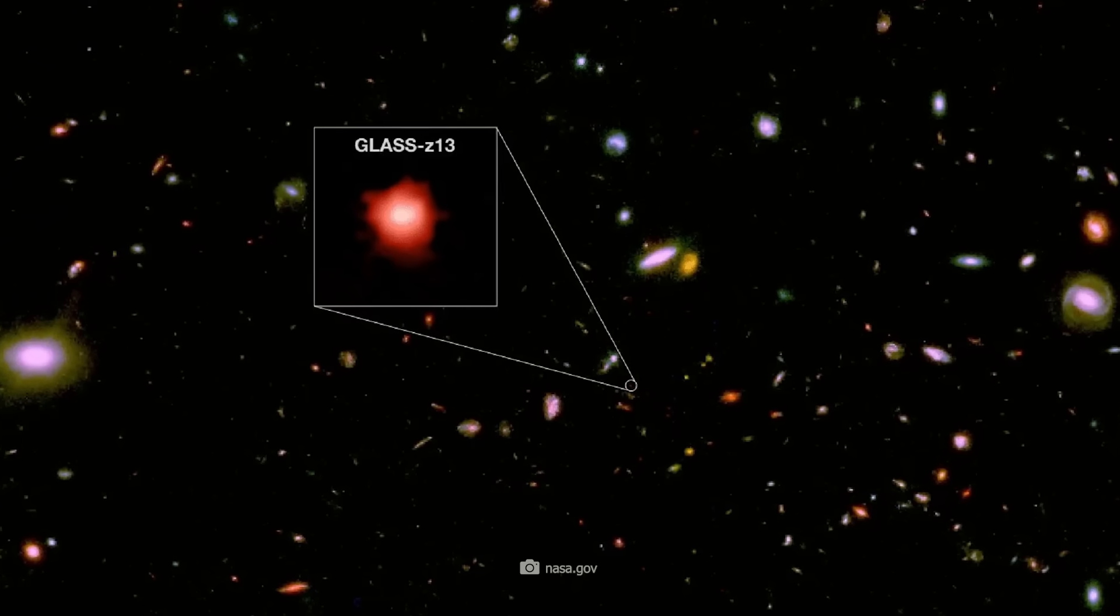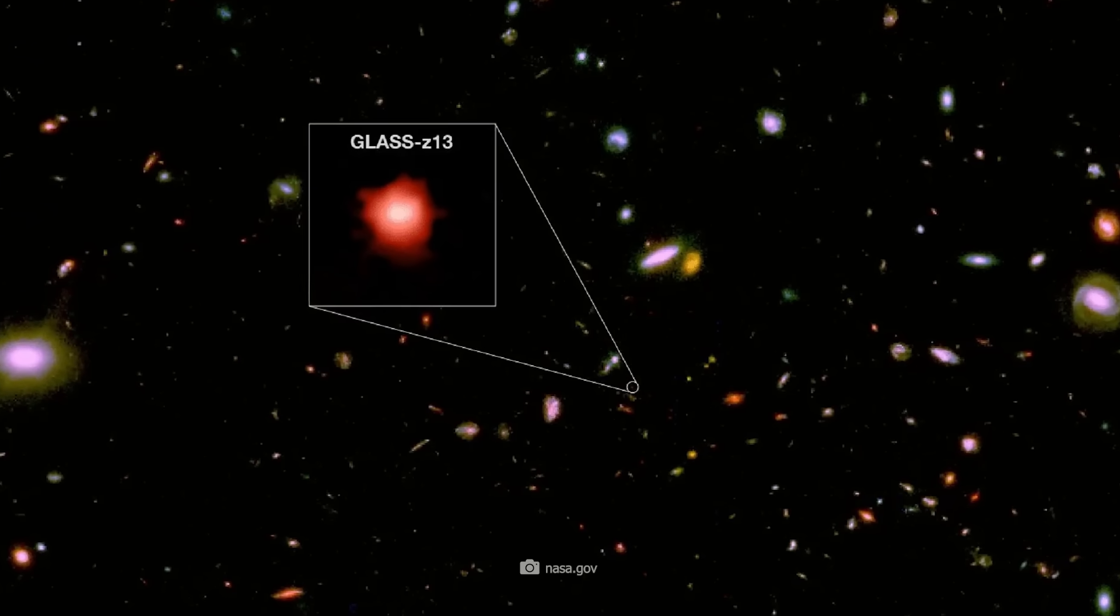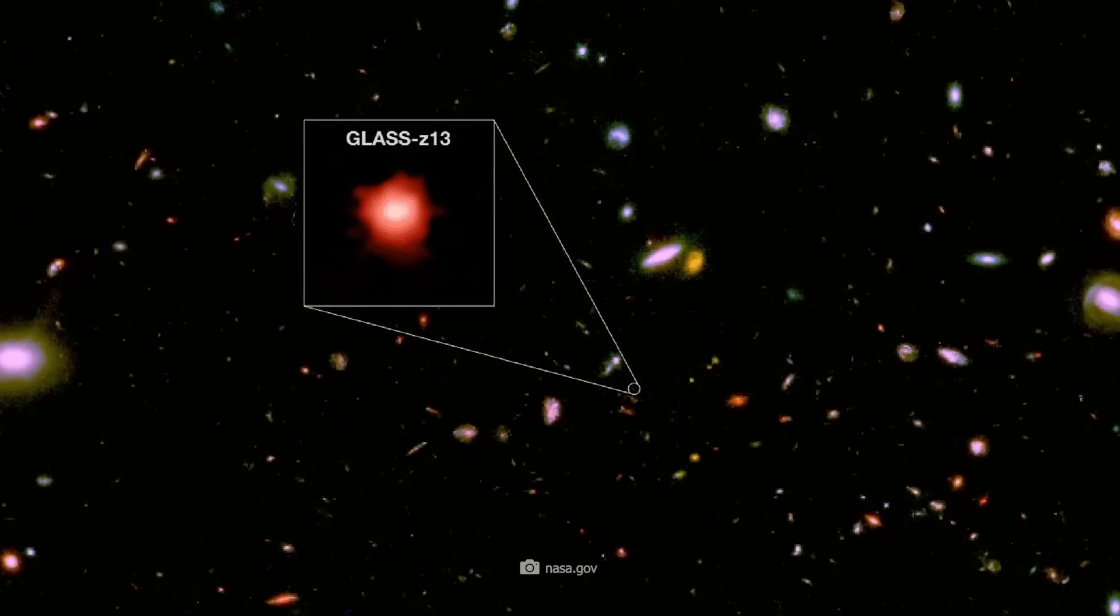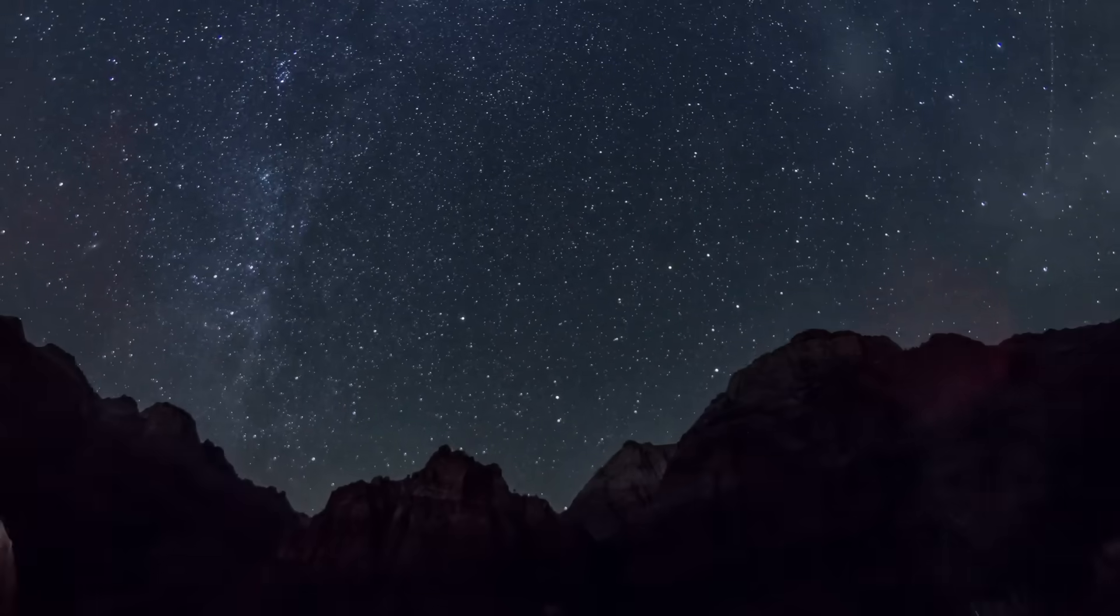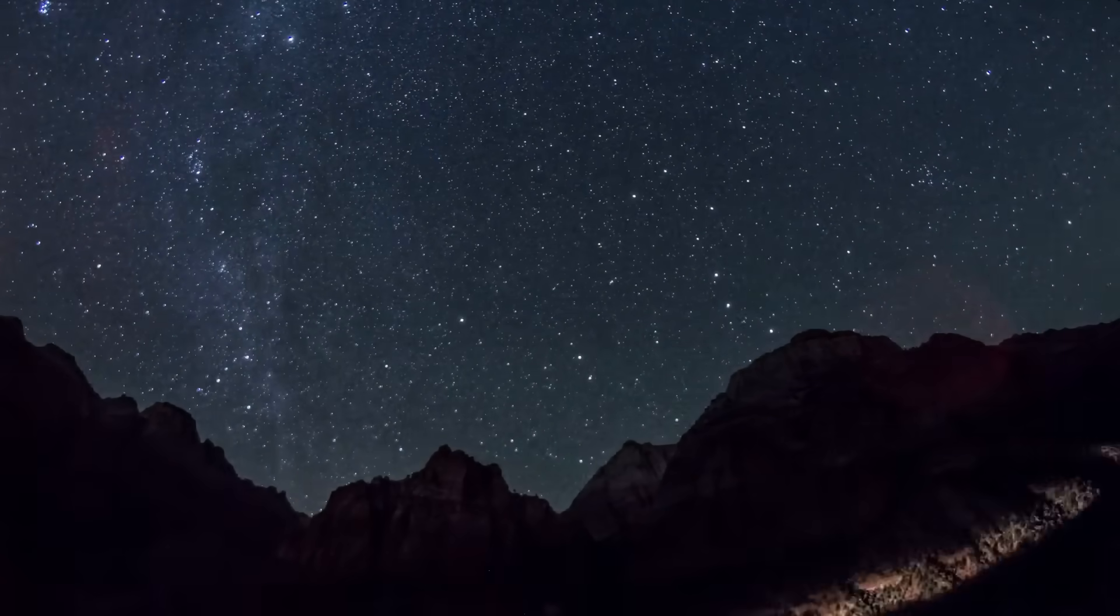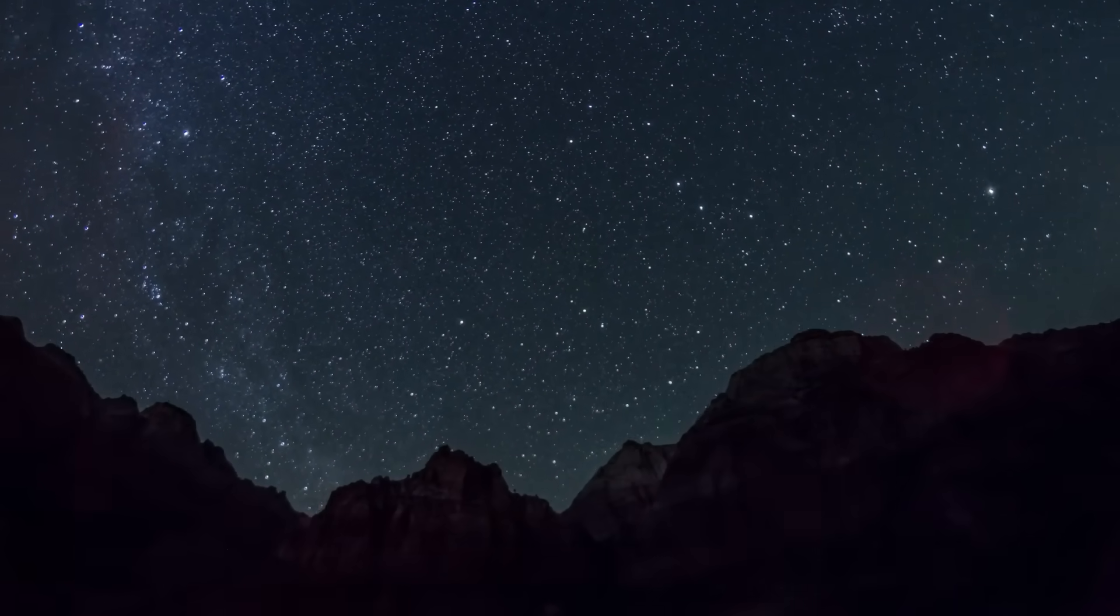Shortly after the first release of the James Webb images, Naidoo found a galaxy with Z13. That was a record. Then another showed up with Z14, and it just kept going.